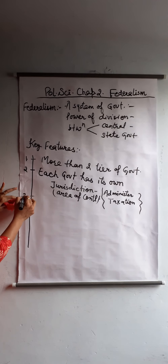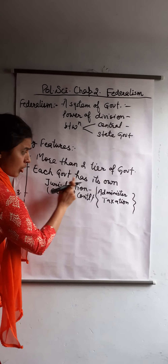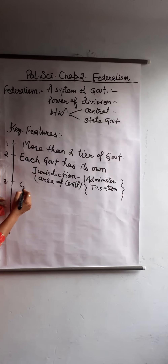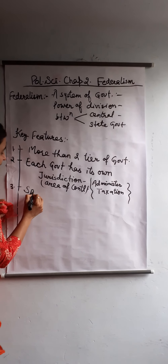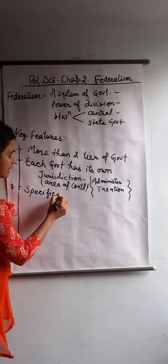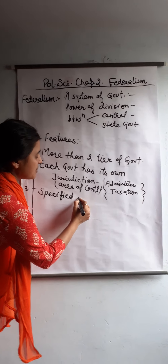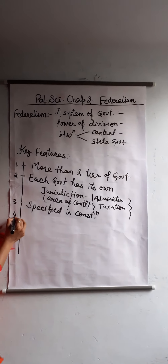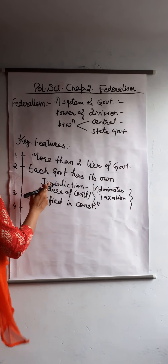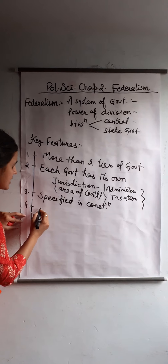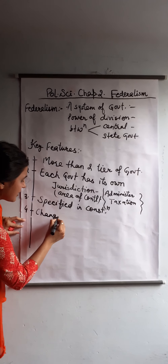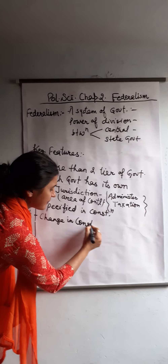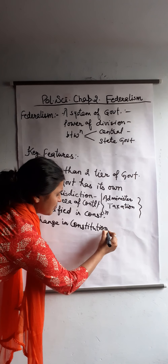The third point is that the jurisdiction of the government has been specified in the Constitution. If the jurisdiction of the government has to change something, there must be a constitutional provision.